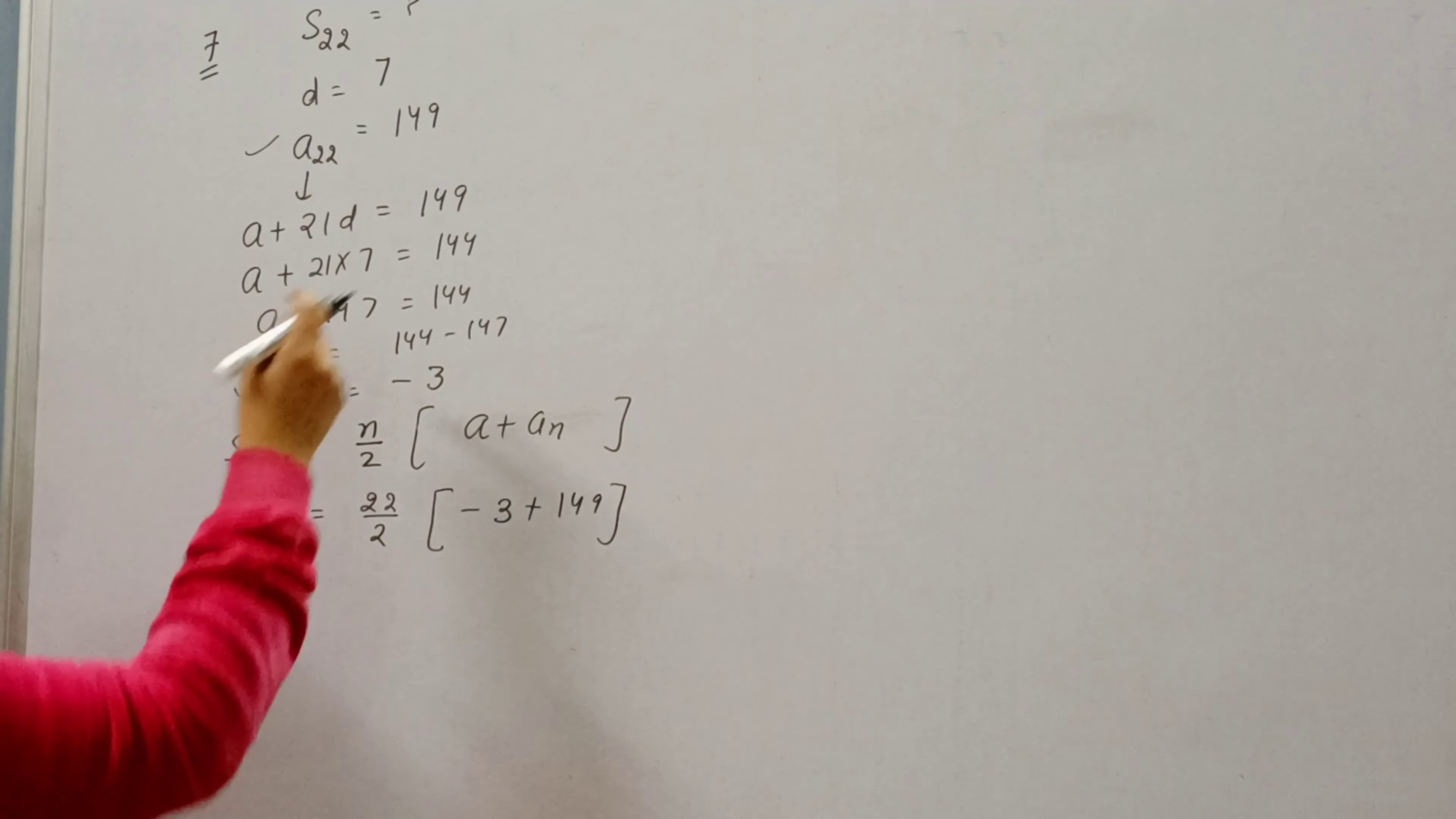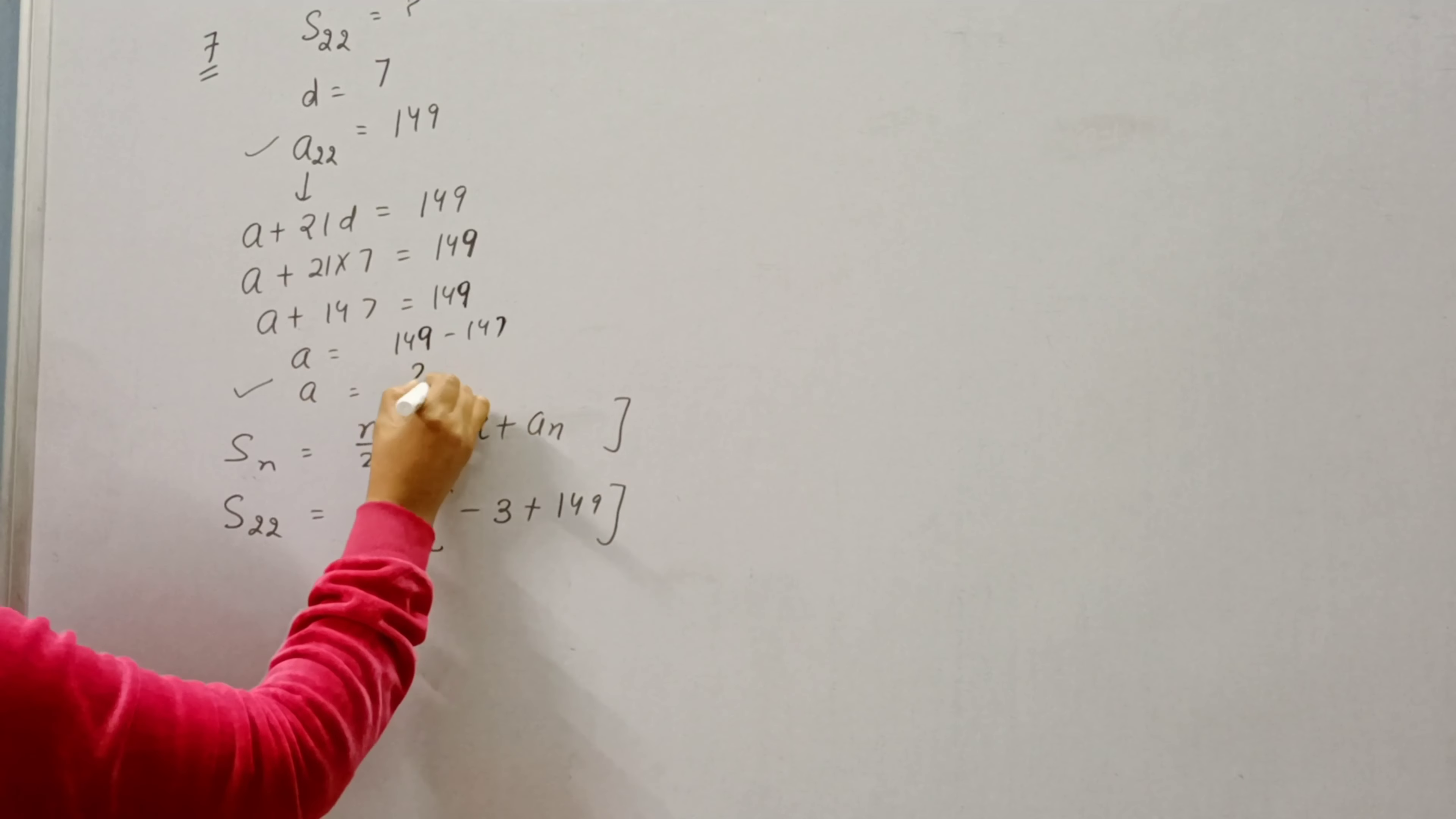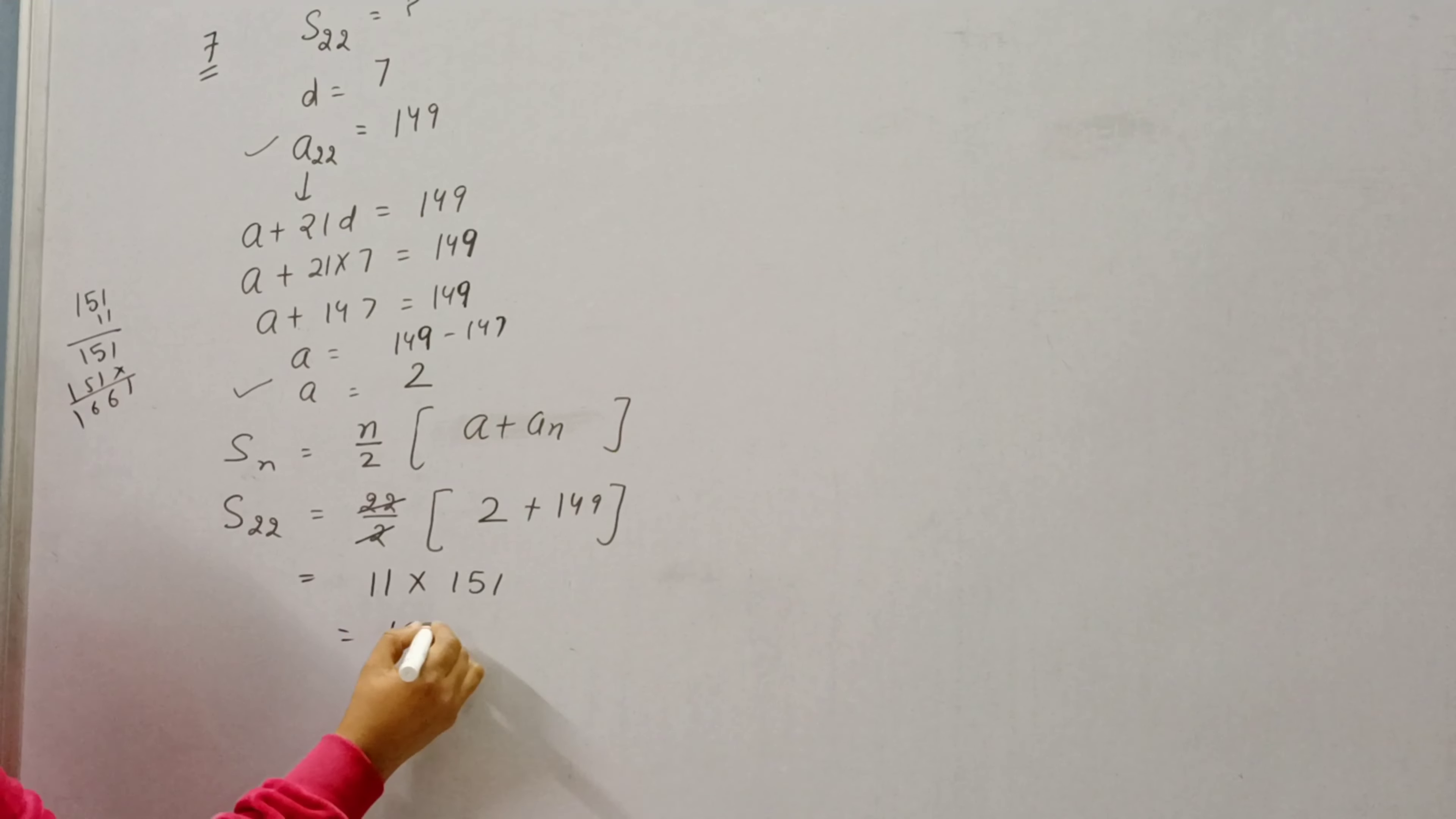One mistake is there. This is 149. 149 minus 147 is equal to 2. So here the value of A is 2. 2 times 11 into 151. So multiply 151 by 11. The answer is 1661. This is question number 7.